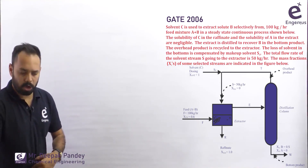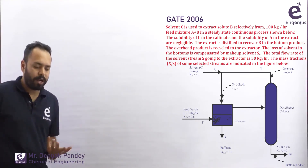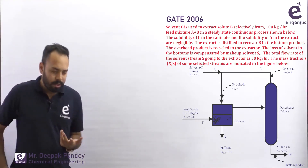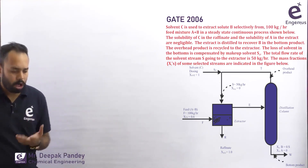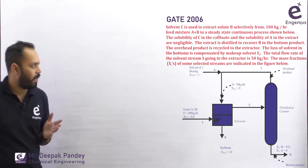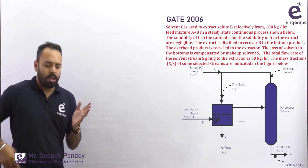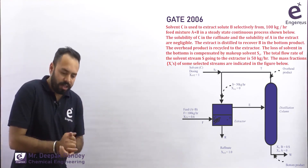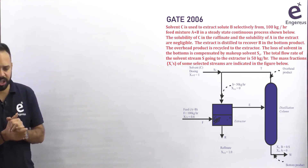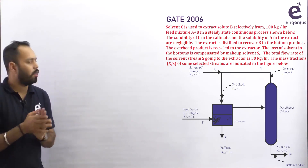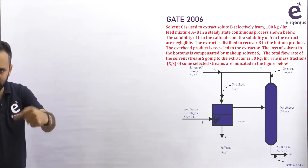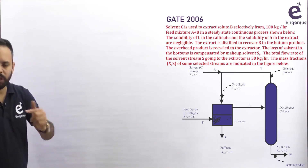The extract is distilled to recover B in the bottom product. The overhead product is recycled to the extractor. The loss of solvent in the bottoms is compensated by makeup solvent SD. The total flow rate of the solvent stream S going to the extractor is 50 kg per hour.